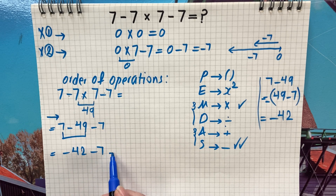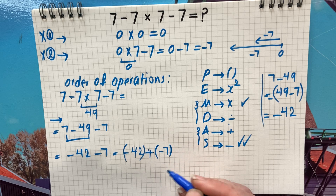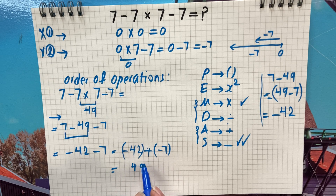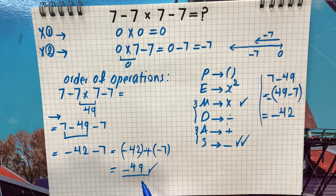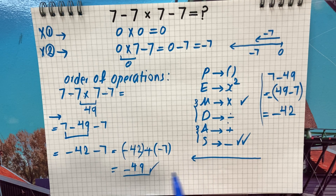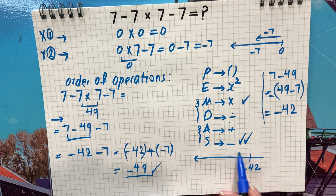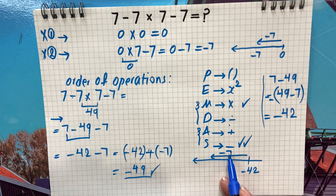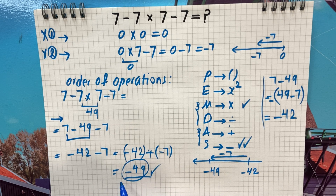Negative 42 minus 7 is the same as negative 42 plus negative 7. Since 42 plus 7 is 49 and both are negative numbers, the answer is negative 49. Using a number line: starting at negative 42 and going left 7 units also gives negative 49. The answer is negative 49. Thank you for watching, see you in the next video.